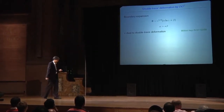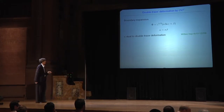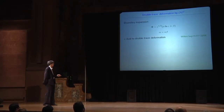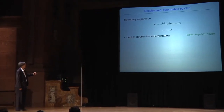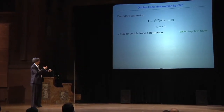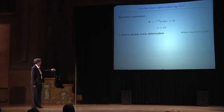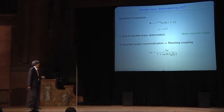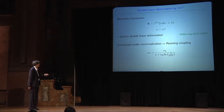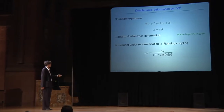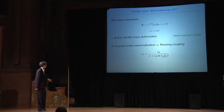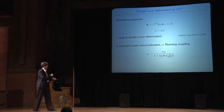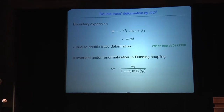One further ingredient in solving this is a method introduced by Witten: using the boundary expansion of our scalar field, and by imposing a linear relation between the two coefficients, we find that κ is dual to a double-trace deformation. This is precisely what we can use here. By noting that Φ is invariant under renormalization, we obtain a running coupling for κ, and in this situation where we have a temperature scale we get a result where we see dynamical scale generation — the denominator can become zero at some particular scale.